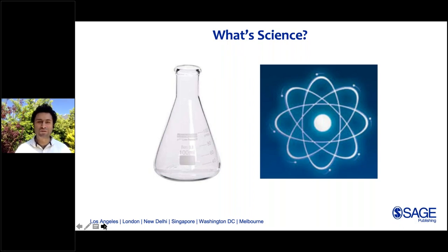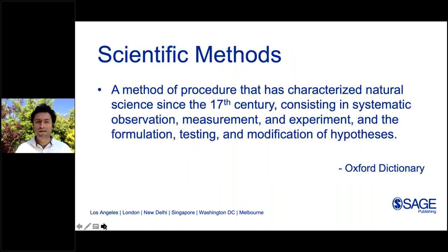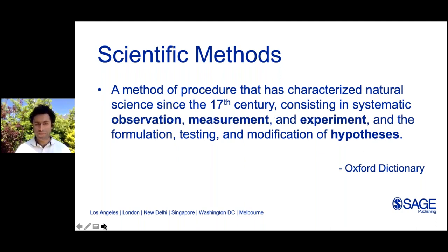On a more serious note, what we mean by science is not really the objects that we study or do our studies with — it is about the methods, what distinguishes science from any other collective human activity, from journalism, from art, from culture. The Oxford Dictionary definition of scientific method is: a method of procedure that has characterized natural sciences since the 17th century, consisting in systematic observation, measurement, and experiment, and formulation, testing, and modification of hypothesis. I highlight the keywords: observation, measurement, experiment, and hypothesis or theory.